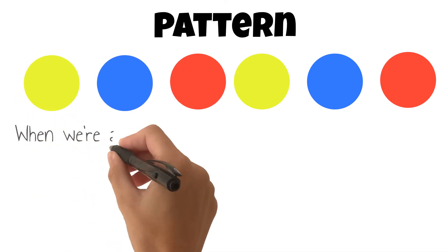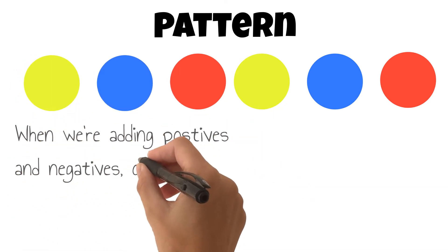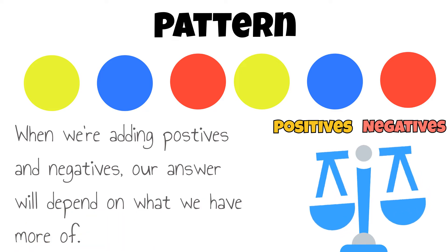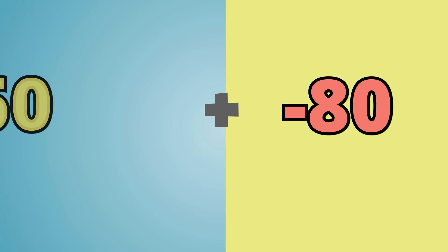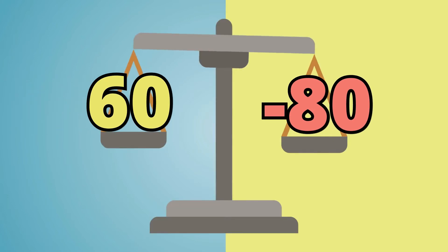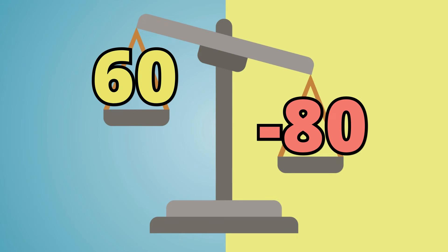There is a pattern we can observe when we're adding integers. When we're adding positives and negatives, our answer will depend on what we have more of. For example, if we add negative 80 and positive 60, our answer will be negative because we have more negatives than positives.